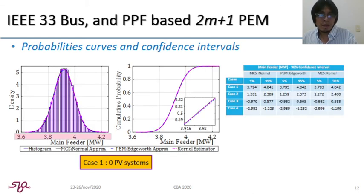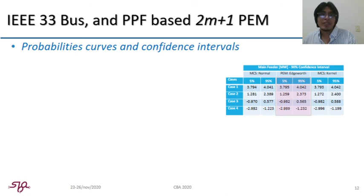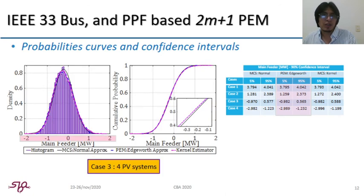So, the point estimate method is combined with the Edgeworth expansion to obtain probability density functions and cumulative distribution functions. So, let's give a look at the main feeder behavior, which is also affected by the PV power injection along the cases. And also, it is presented a 90% confidence interval of power through main feeder for each case, which can be directly obtained from their cumulative distribution. Rapid observation of PDF and CDF points out that the Edgeworth expansion yields high fitting accuracy for each case.